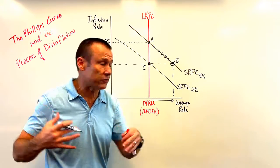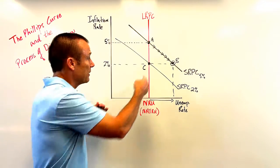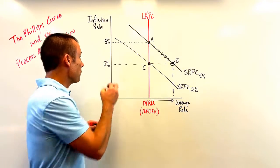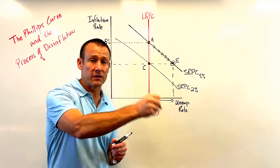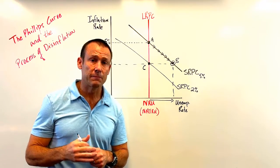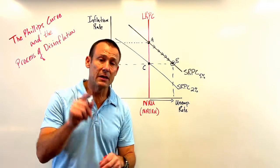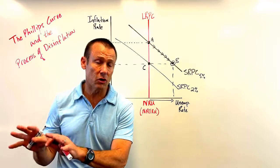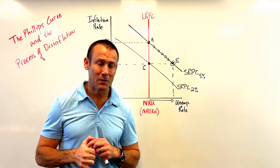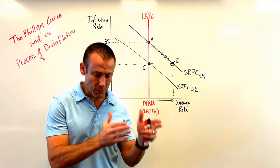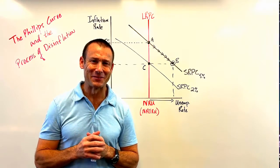We had positive cyclical unemployment holding us in that recession until our expectations adjusted to match our actual inflation rate. Once the SRPC shifted and we began to expect 2%, the Fed had done its job — bringing us down to their inflationary target. The Fed has a mandate for price level stability, which they currently interpret as a 2% inflation target. Watch Part 1, Part 2, and Part 3 and I think you'll own the Phillips Curve. We'll see you in the next video.